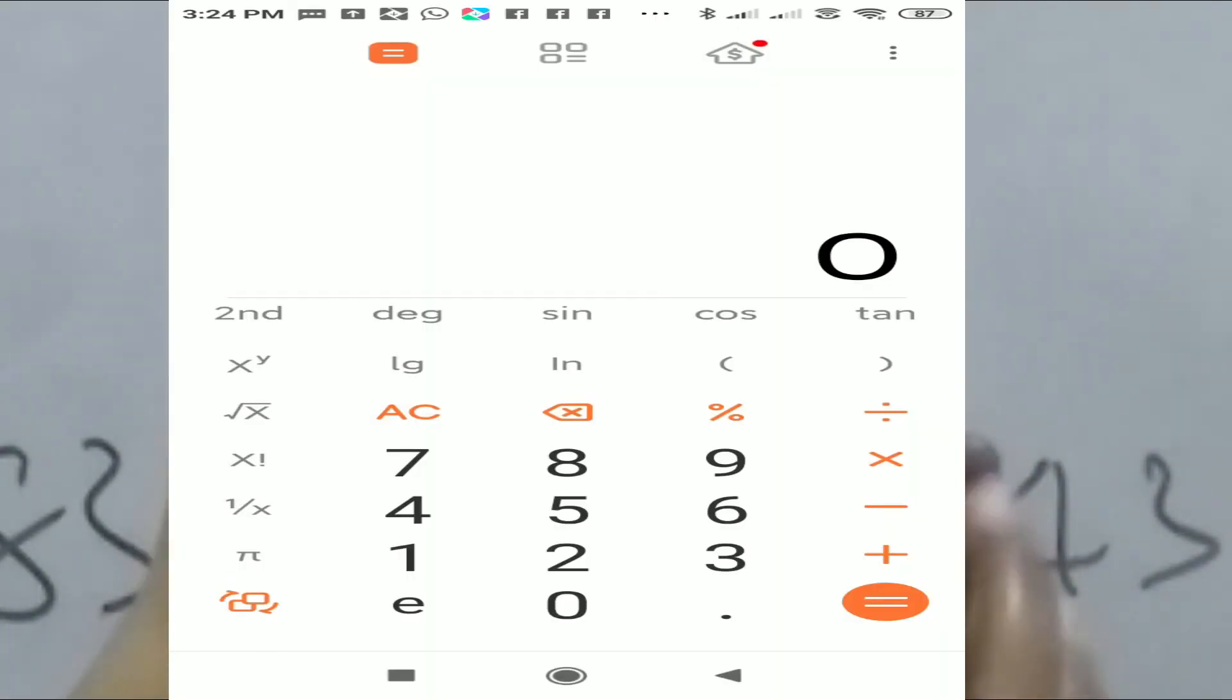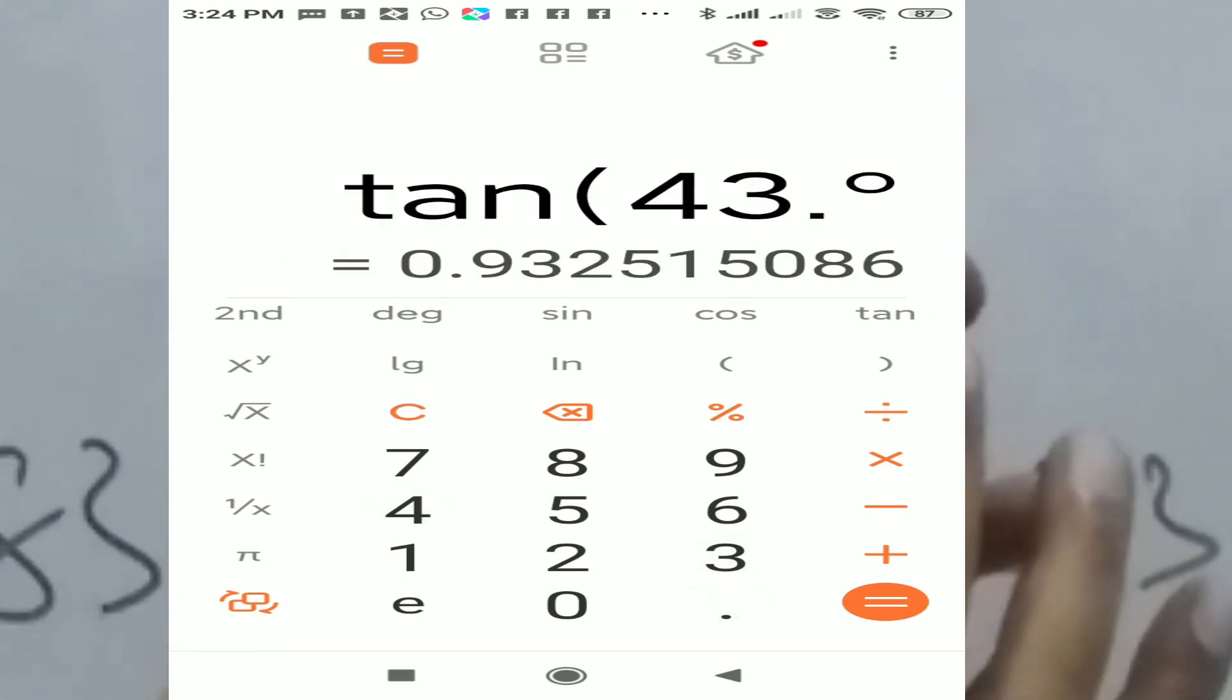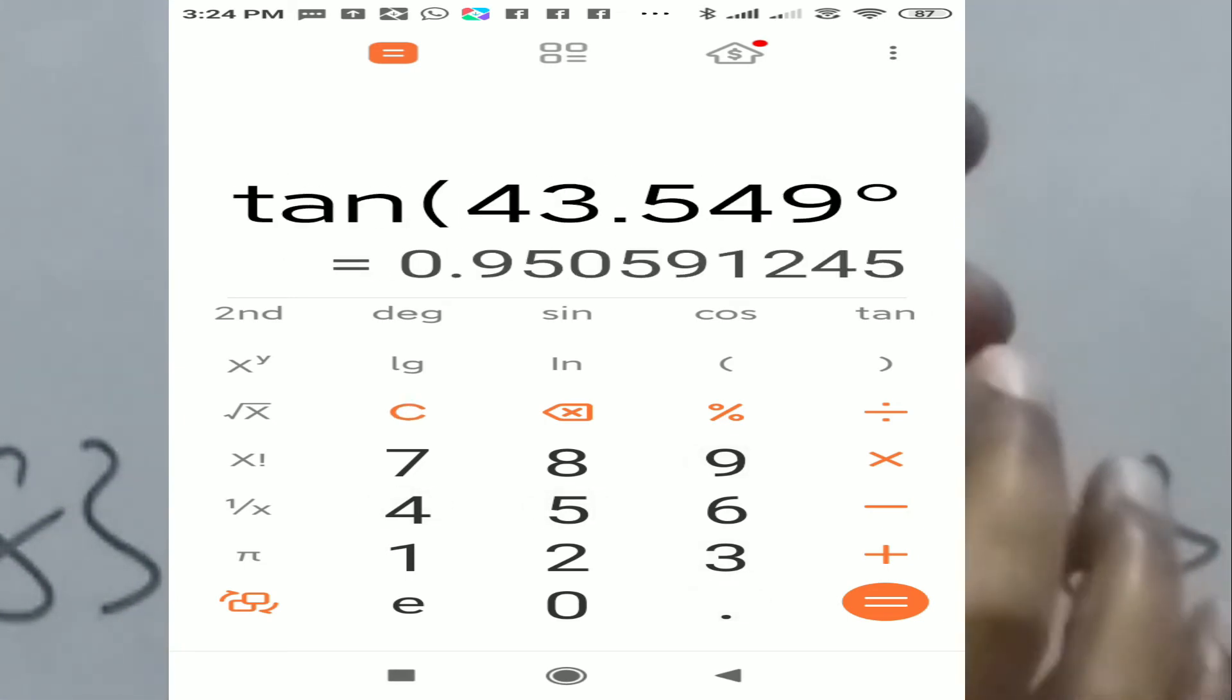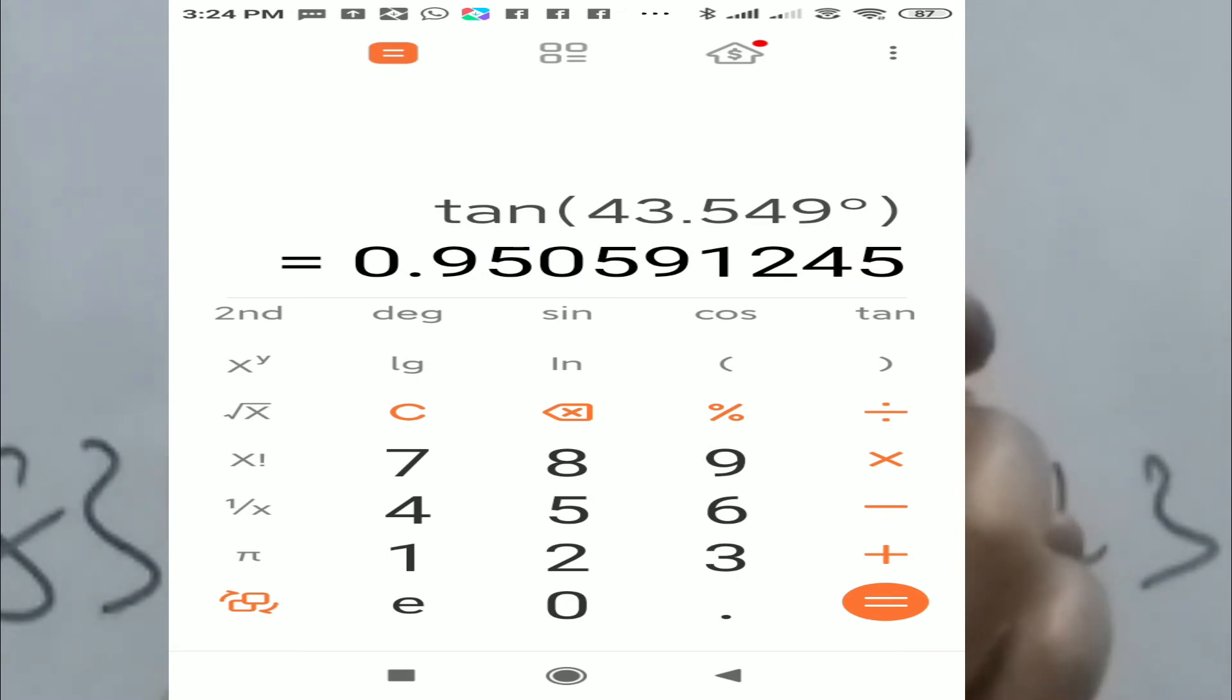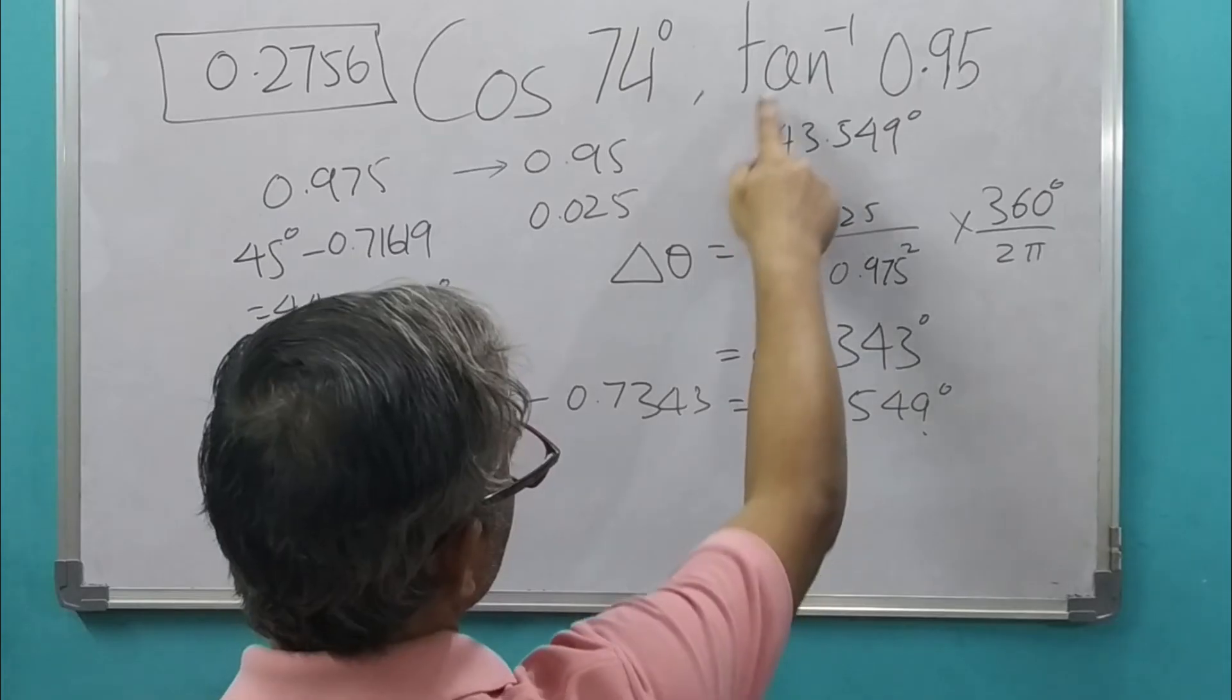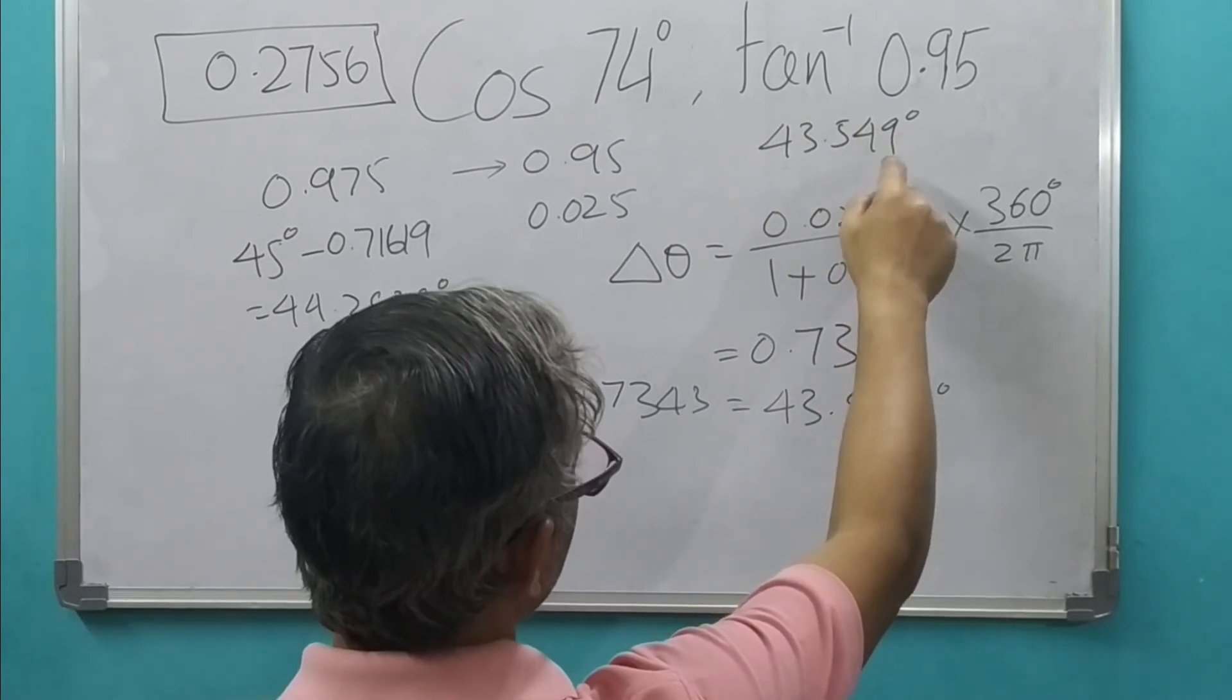Tan 43.549 degrees. You can see 0.950. That is the value of tan inverse 0.95.